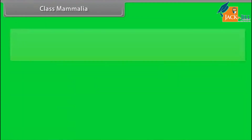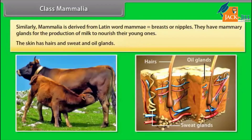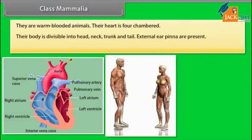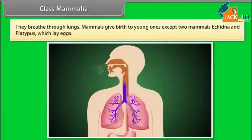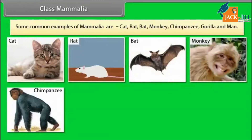Class Mammalia. Mammalia is derived from Latin word mamma, meaning breasts or nipples. They have mammary glands for the production of milk to nourish their young ones. Their skin has hairs and sweat and oil glands. They are warm-blooded animals. Their heart is four-chambered. Their body is divisible into head, neck, trunk, and tail. External ears (pinnae) are present. They have four limbs. The diaphragm divides the body into two cavities internally. They breathe through lungs. Mammals give birth to young ones, except Echidna and Platypus which lay eggs. Common examples are cat, rat, bat, monkey, chimpanzee, gorilla, and man.